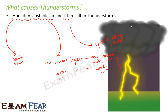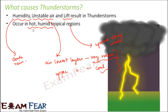These are the three important reasons behind thunderstorms. Therefore, thunderstorms occur in hot, humid, tropical regions. Why hot regions? Because only then will the lower layers of air be very warm and unstable. Why humid? Because presence of water vapor is mandatory for a thunderstorm to happen, and humidity is nothing but the presence of moisture in the environment. Only in regions where a hot and humid climate exists are thunderstorms more likely to happen.